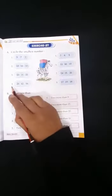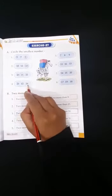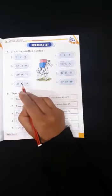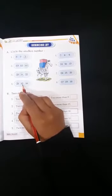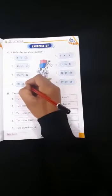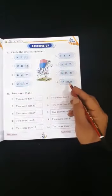Number 4. 21, 12, 16. Yes, 12 is the smallest number. Therefore, we will put circle on 12. In this manner, you should complete the remaining exercise.